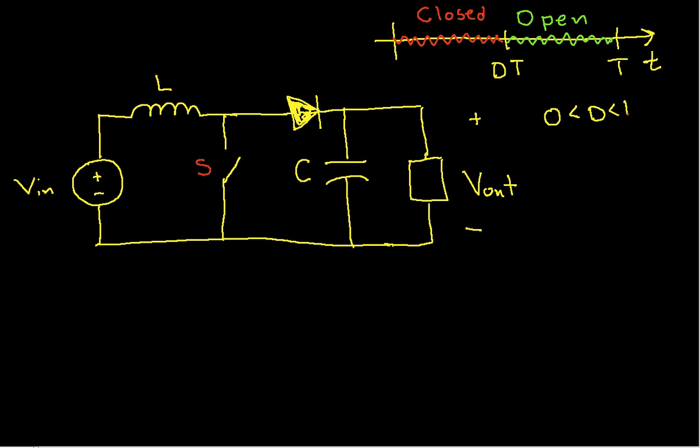Now, again, our goal is to analyze how the circuit works as the switch opens and closes, and again, to understand the relationship between V in, V out, and D. We will make some assumptions in order to do this.